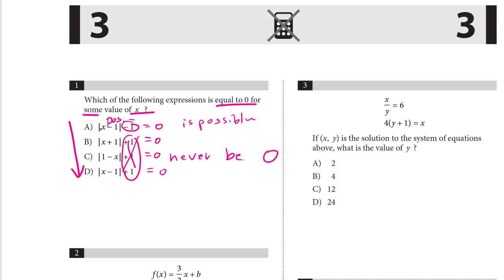So if the absolute value evaluates to one, like x equals two, two minus one absolute value would be one minus one, is zero. Then it would work. So a is the only option where the expression could be equal to zero for some value of x.